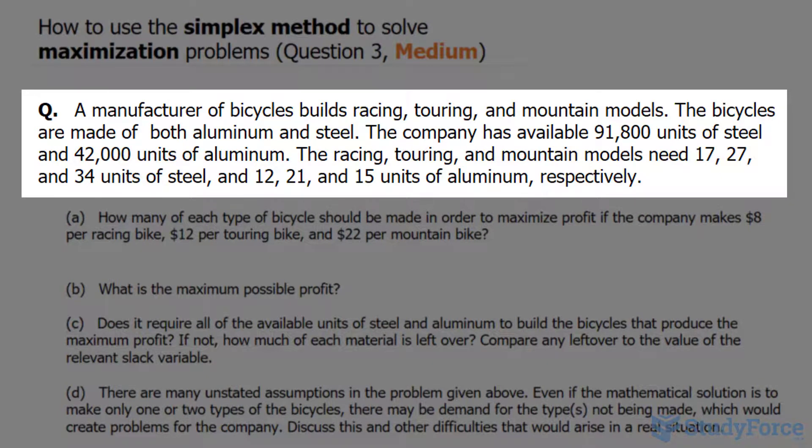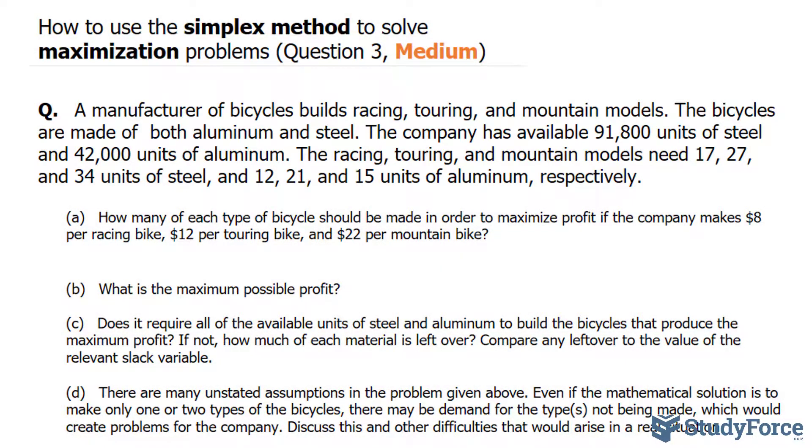The bicycles are made of both aluminum and steel. The company has available 91,800 units of steel and 42,000 units of aluminum. The racing, touring, and mountain models need 17, 27, and 34 units of steel and 12, 21, and 15 units of aluminum, respectively.